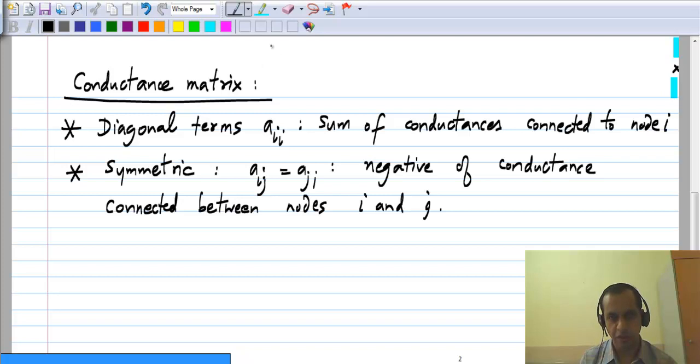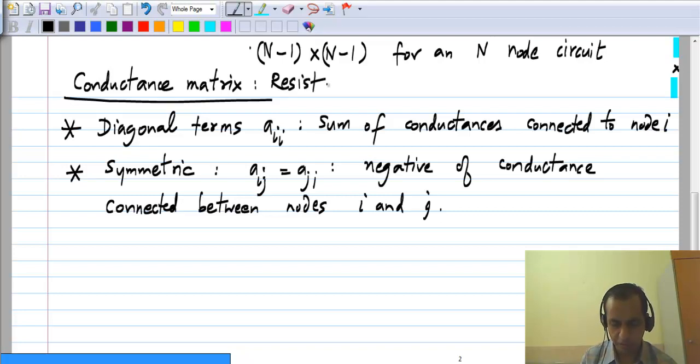Let me also add that for an n node circuit, the conductance matrix will be n minus 1 times n minus 1, so square matrix. And also these properties we have written, they are for the specific kind of circuits we have been considering, which consists of only resistances or conductances and current sources.